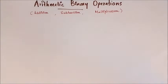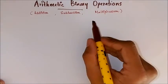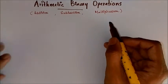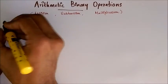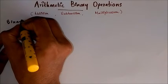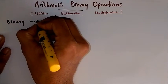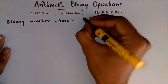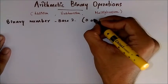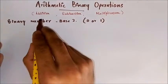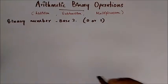Hello everyone, this is EduNik. In this tutorial we will be learning how to do the three arithmetic binary operations, that is addition, subtraction, and multiplication. First of all, binary numbers. What are binary numbers? Binary numbers are numbers with base 2. Base 2 means they have digits with only two values, that is either 0 or 1. Now we are doing our arithmetic operations using binary numbers.